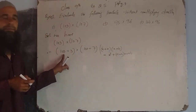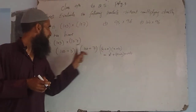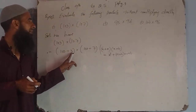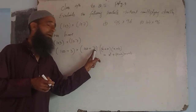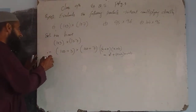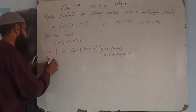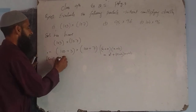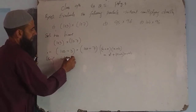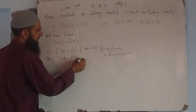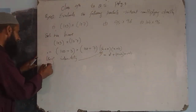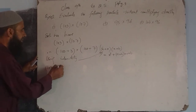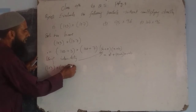We have x, and x ka value 100 hai. Plus a, a ka value 3. x is 100, and b ka value hamare paas 7. Using this identity, we will apply it here.